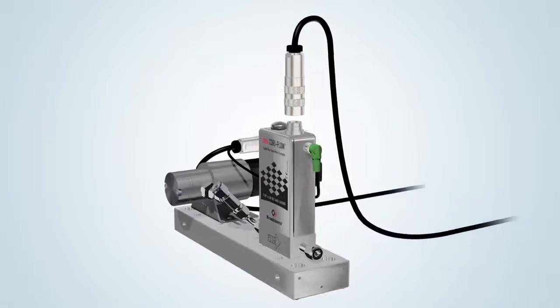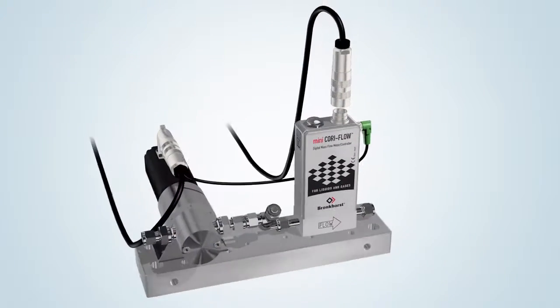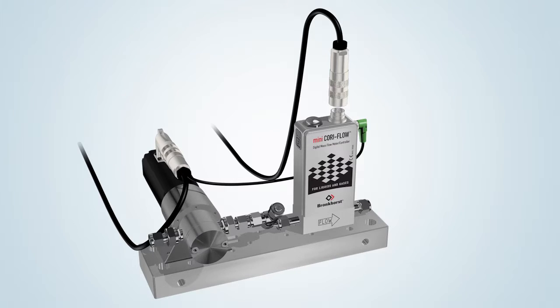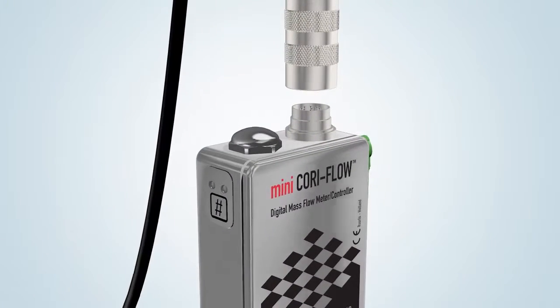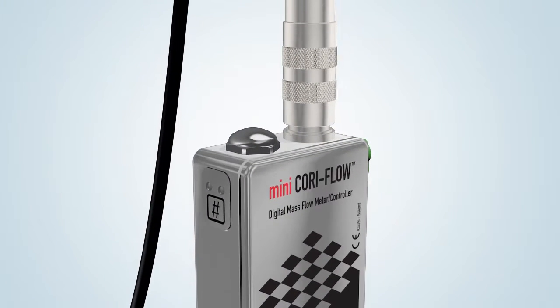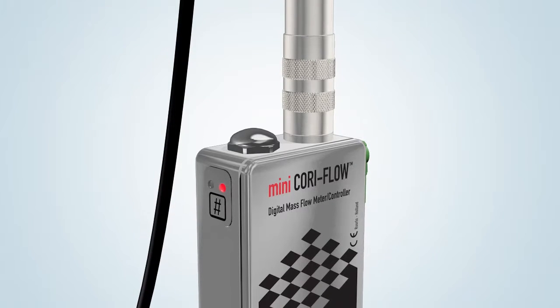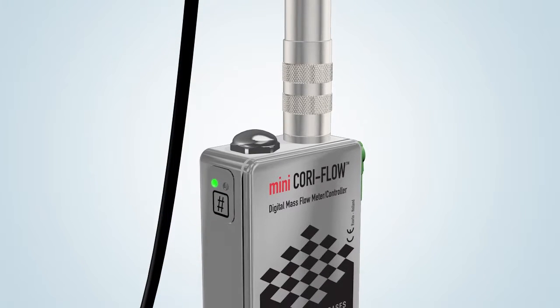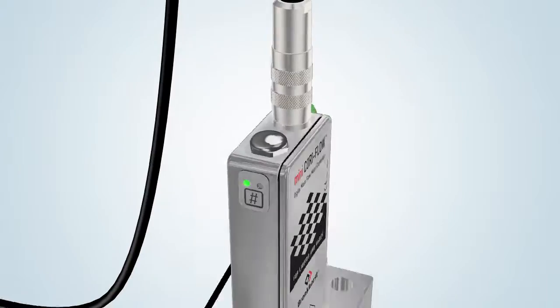A Bronkhorst Mini CoriFlow instrument requires a voltage of between 15 and 24 volts. When the supply voltage is connected, the LEDs show the current status. The instrument is ready for use when the green LED lights up.